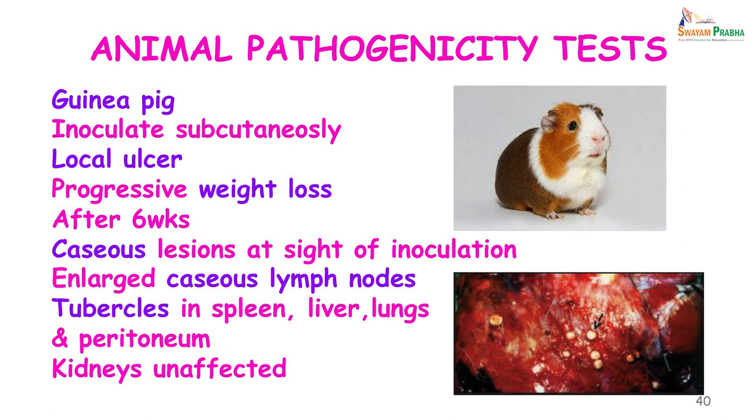The line probe assay (LPA) is another molecular test found to be very useful for the detection of Mycobacterium tuberculosis and for detecting mutations which cause drug resistance for both first and second-line anti-tubercular drugs. The test is usually performed on growth of Mycobacterium tuberculosis and can also be done directly on sputum samples with 3+ grading. Animal pathogenicity testing is more of historical importance: guinea pigs are inoculated subcutaneously, a local ulcer forms and there is progressive weight loss. After 6 weeks there may be a caseous lesion at the site of inoculation; if the animal is sacrificed, you will find that the lymph nodes are enlarged and caseous, and tubercles will be seen in the spleen, liver and peritoneum, while the kidneys are unaffected.